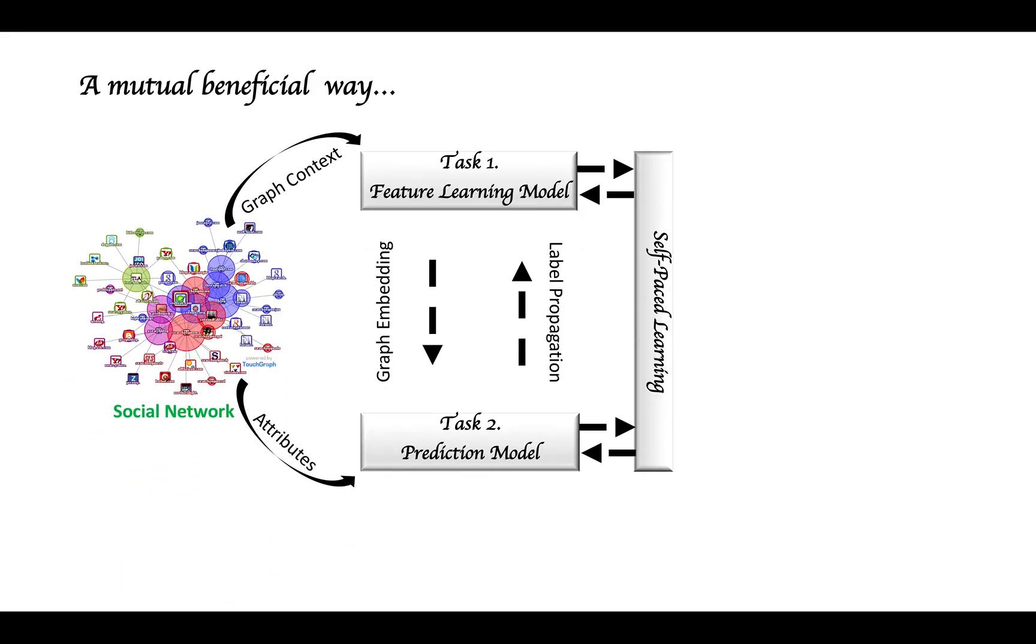In this paper, inspired by the family of curriculum learning, we propose a self-paced framework named SPARC that gradually learns the rare category-oriented network representation and the characterization model in a mutually beneficial way. In particular, SPARC stands for Self-Paced Rare Category network representation and characterization.